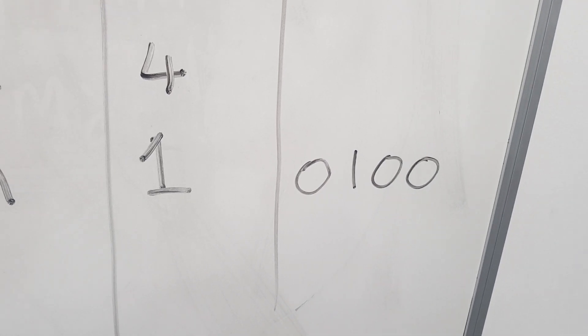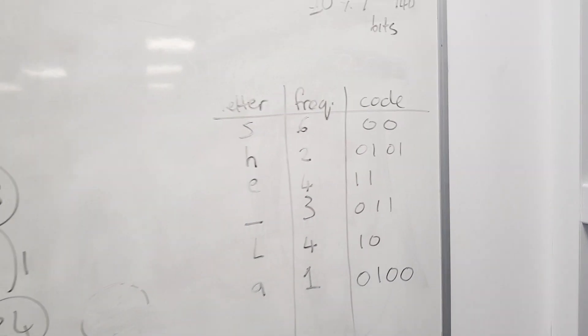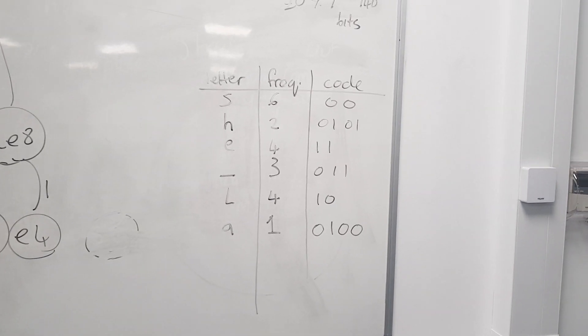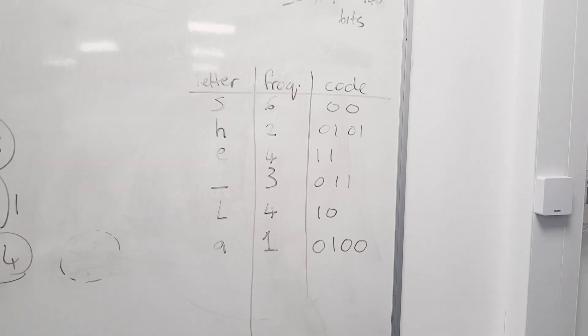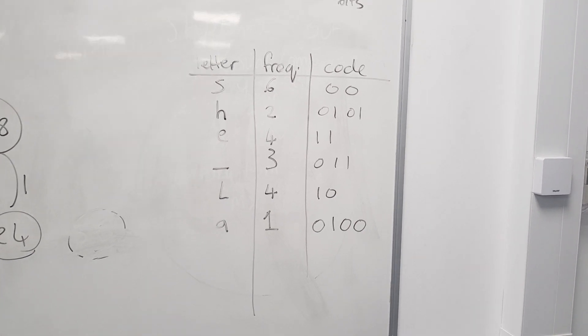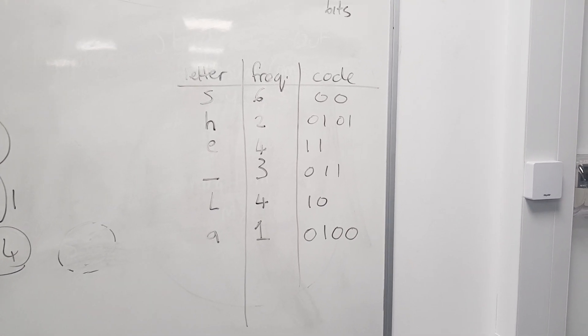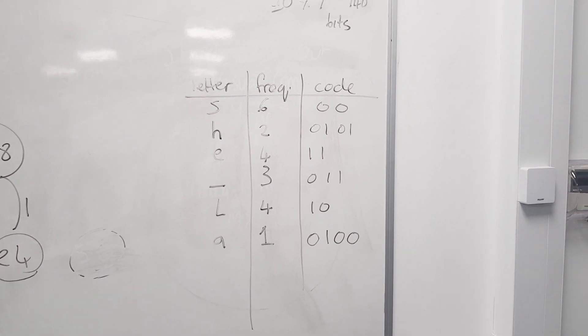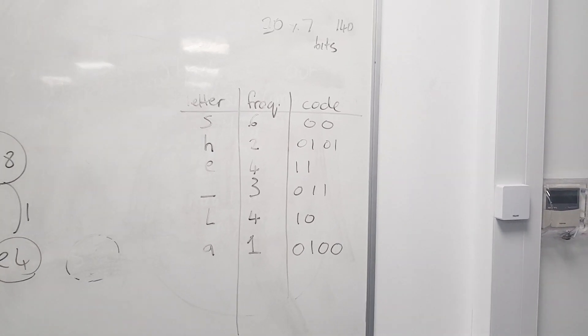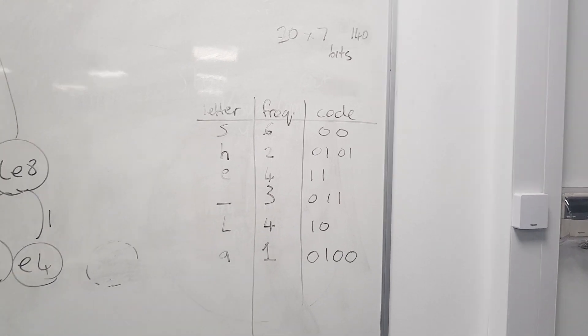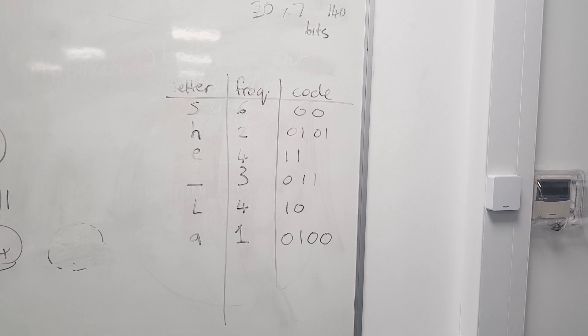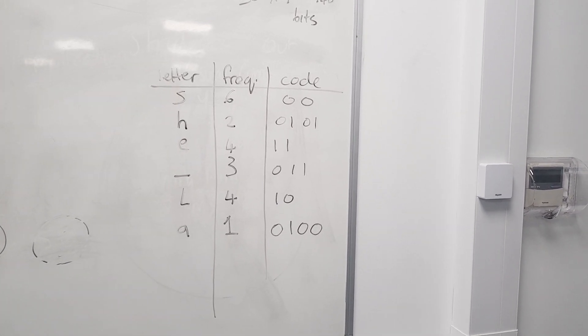And so on. So having completed transcribing the codes, I've now got S can be represented by two bits, and the least frequently occurring characters H and A can be represented by four bits. So now what we can do is we can write out the original message but using the codes derived from the Huffman tree.